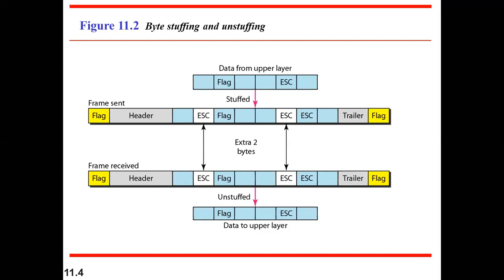When the data contains the same character as the flag, the receiver incorrectly thinks it is the end of a frame, but in reality the frame is not finished — it is a continuation of the same frame. To handle this situation, we use byte stuffing. In byte stuffing, whenever the flag character appears within the data, a special escape character is inserted before it.